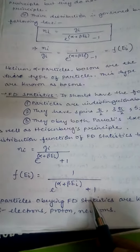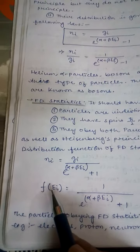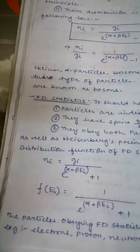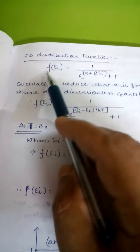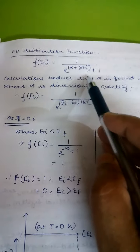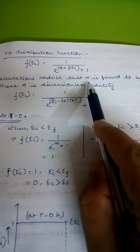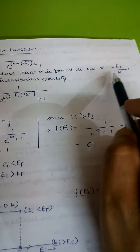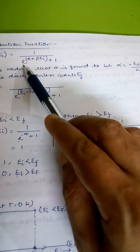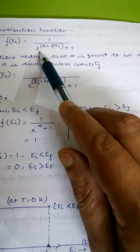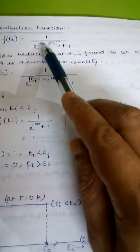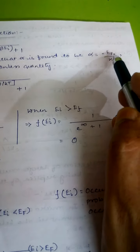Since we usually deal with electrons, which are fermions, FD statistics and the Fermi distribution function are more important compared to others, and have enormous applications in various fields of engineering. The FD distribution function is f equals 1 over (e to the power alpha plus beta e_i plus 1). Calculation reveals that alpha, the dimensionless constant, is found to be minus E_F over kT. Since e to the power (alpha) and e to the power (beta e_i) must have the same dimensions, and the exponent must be dimensionless, alpha equals minus E_F over kT.